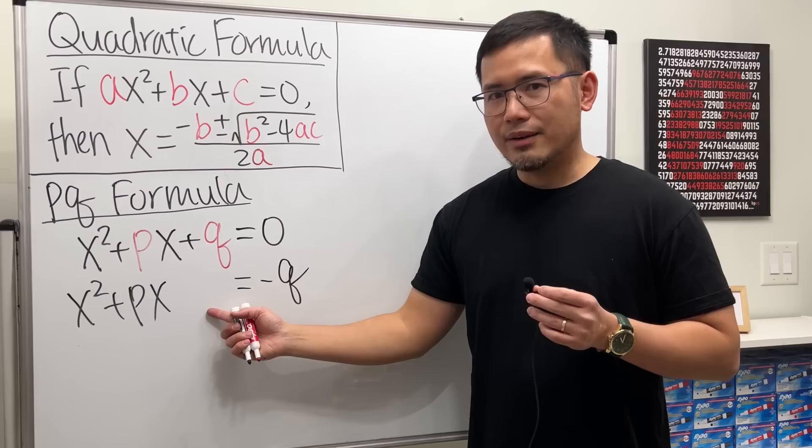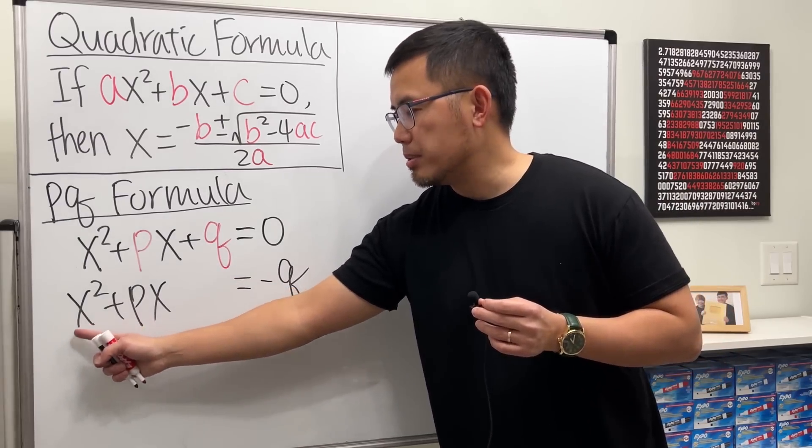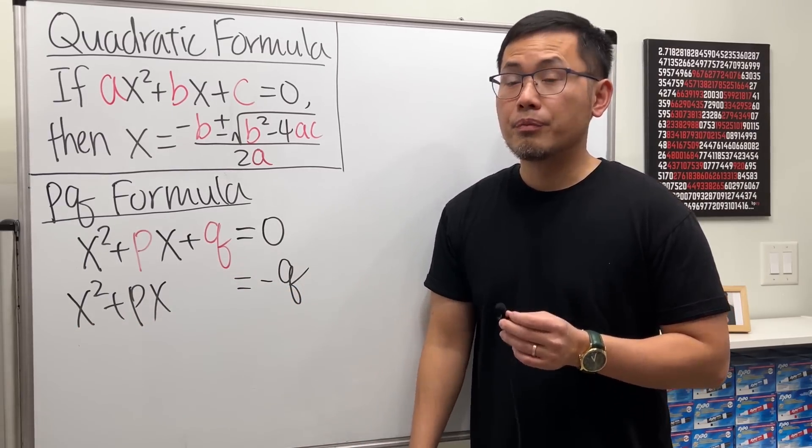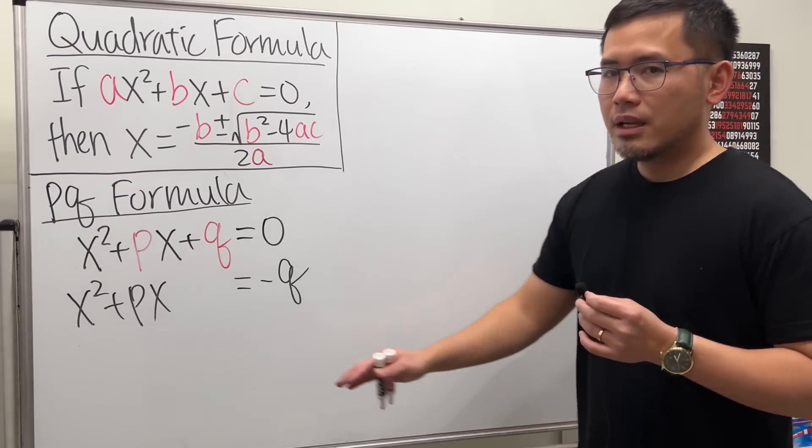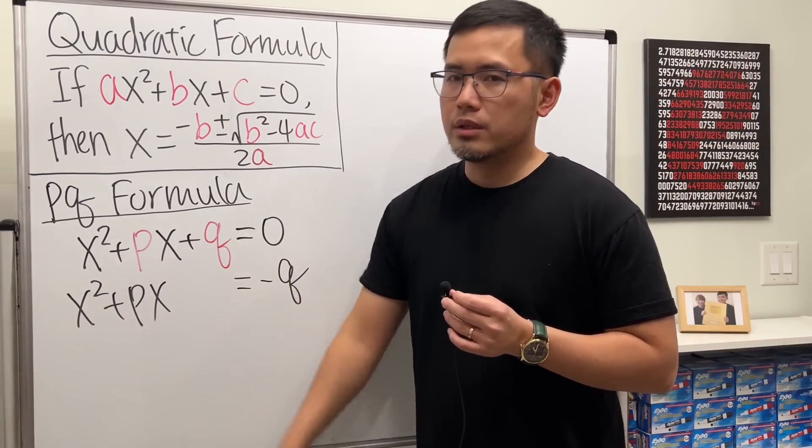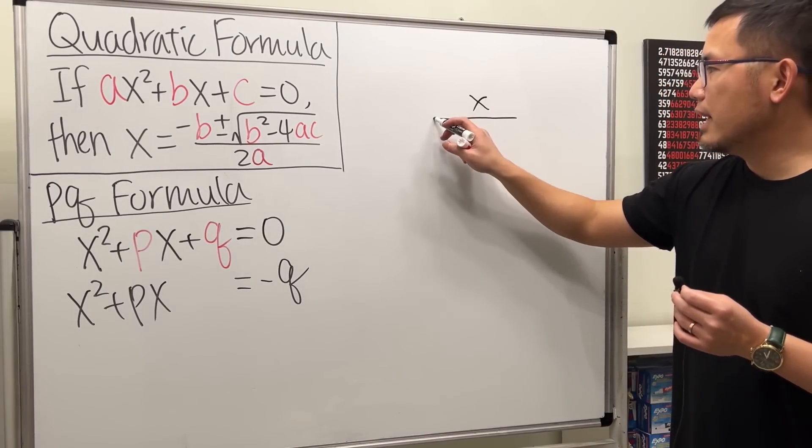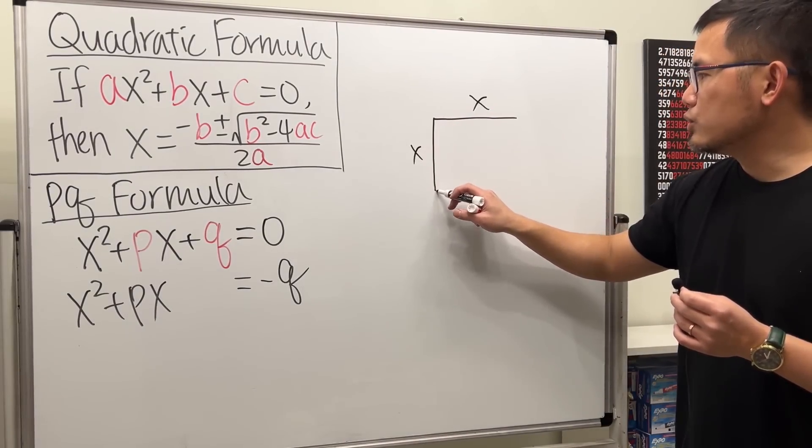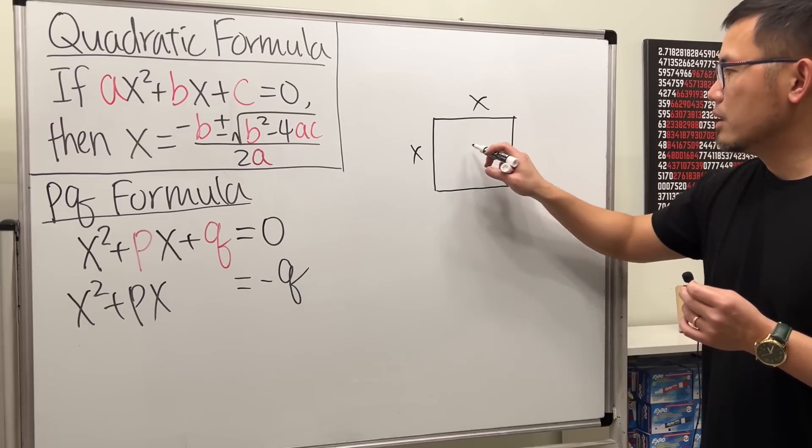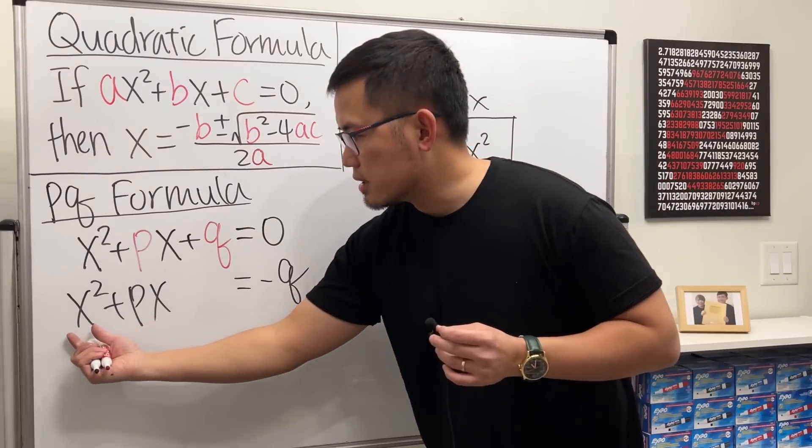And then, we will have to think about one number to be added here, so that we can complete the square on the left-hand side. Well, let's take a look from a geometry point of view. This x squared can be located like this. I have a length x right here, and likewise here. And then, I can draw a square. The area here is precisely x squared.